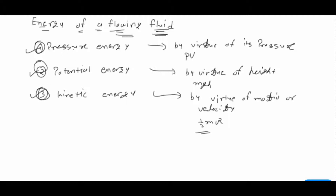There are mainly three types: pressure energy, potential energy, and kinetic energy inside the flowing fluid. First is pressure energy. The definition of pressure energy is: it is the energy possessed by a liquid by virtue of its pressure. The formula is P into V — pressure into volume is the formula for pressure energy.